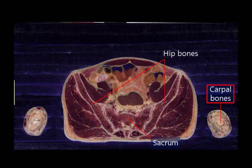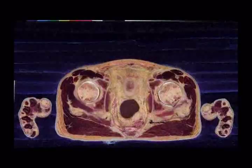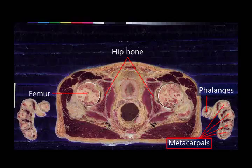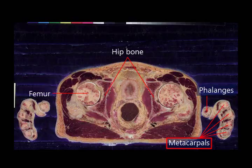The ulna and radius meet the carpal bones at the wrist joint. The carpal bones continue to the metacarpal bones and to the phalanges. The phalanges are located at every finger and there are a total of five metacarpal bones. With the exception of the bone that goes to the thumb, four of them are shown here.